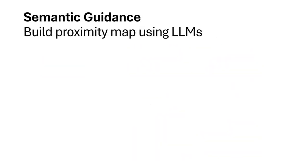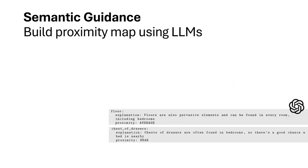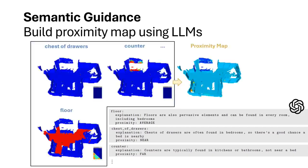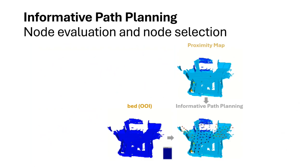We query a large language model to understand the typical proximity between the object of interest and common objects. For instance, the floor has an average proximity to the bed. Chests of drawers are typically much closer to the bed, while counters are generally far from the bed. Using these common sense priors, we compute a proximity map that indicates the likelihood of finding a bed near different voxels. The proximity map, along with the observed map of the object of interest, guides the informative path planning for an efficient search.